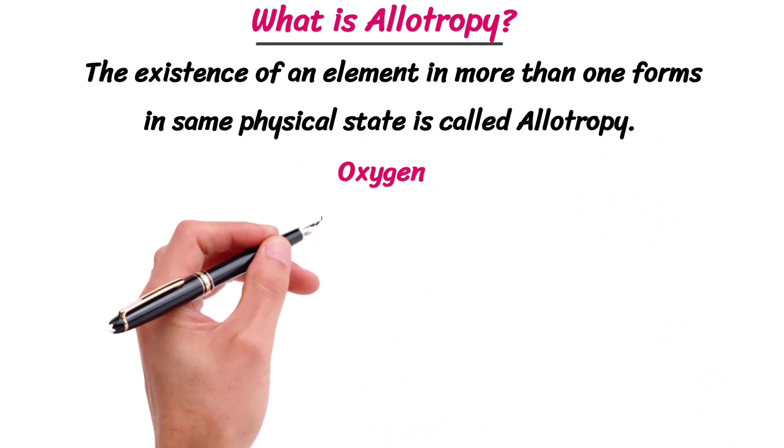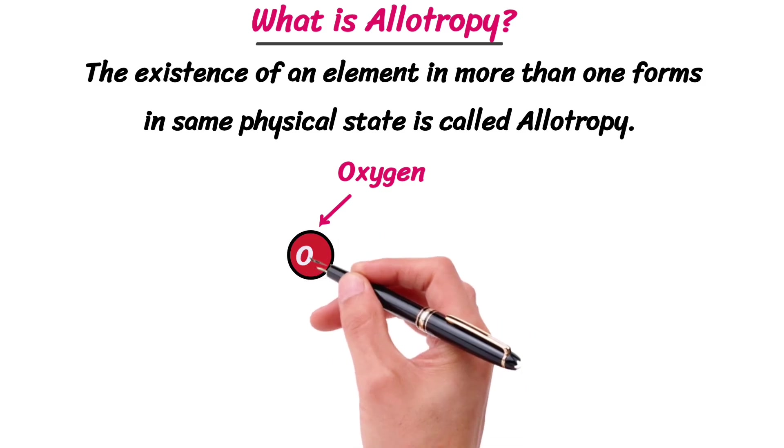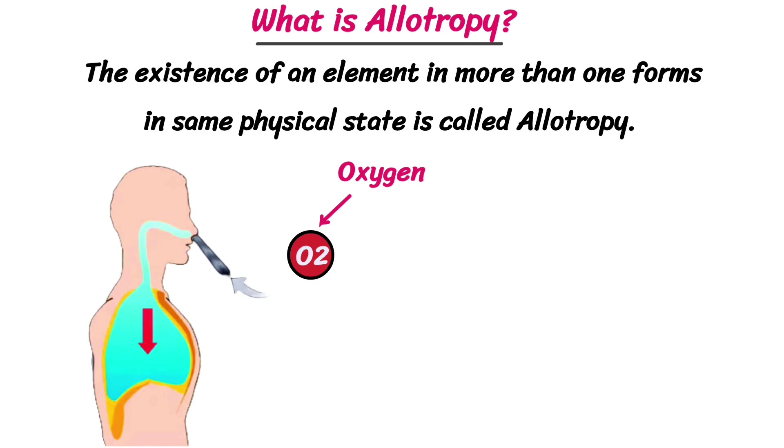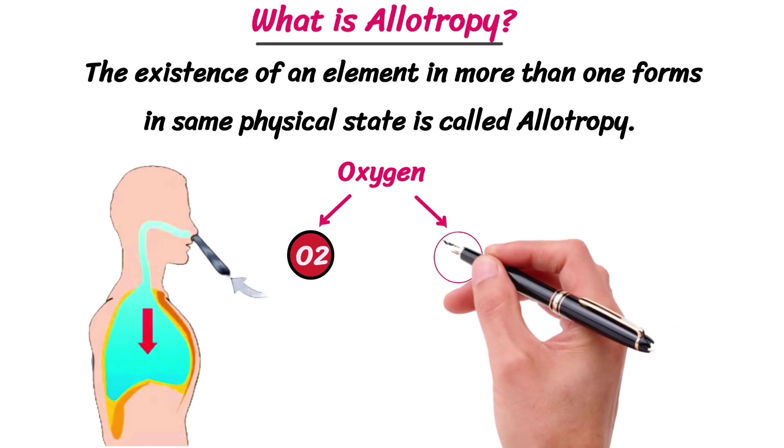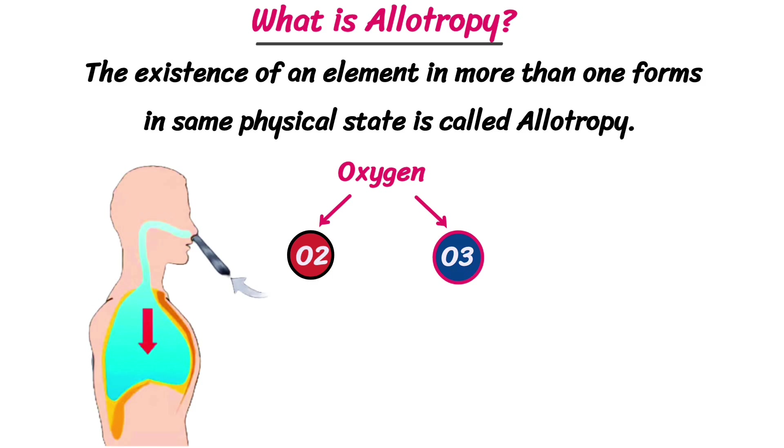For example, oxygen is an element and exists as diatomic oxygen O2, which we use for respiration, and life is impossible without this form of oxygen. Second form of oxygen known as triatomic molecular oxygen, O3, which is known as ozone.